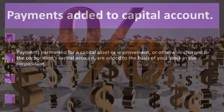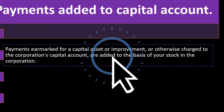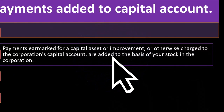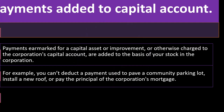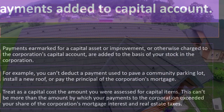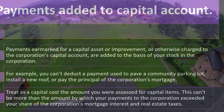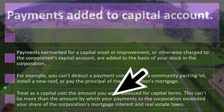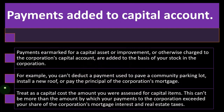Payments added to capital account. Payments earmarked for a capital asset or improvement, or otherwise charged to the corporation's capital account, are added to the basis of your stock in the corporation. For example, you can't deduct a payment used to pave a community parking lot, install a new roof, or pay the principal of the corporation's mortgage. Treat as a capital cost the amount you were assessed for capital items. This can't be more than the amount by which your payments to the corporation exceeded your share of the corporation's mortgage interest and real estate taxes.